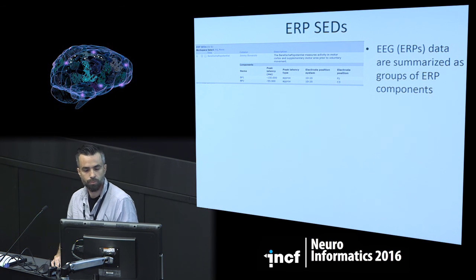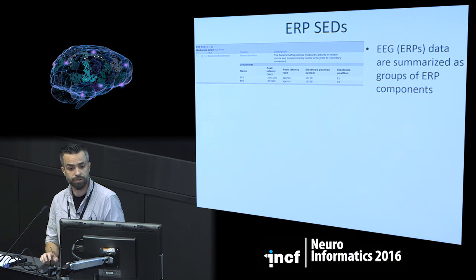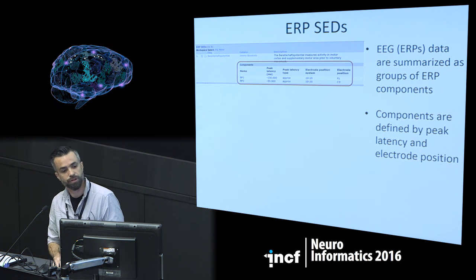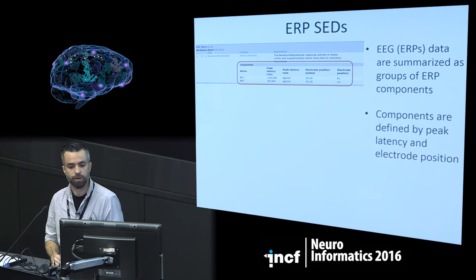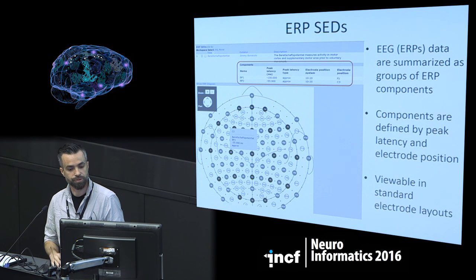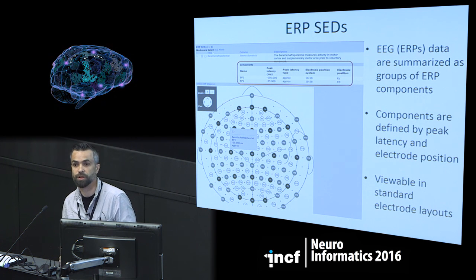For EEG data, we allow users to summarize it in terms of ERPs, which are summarized as groups of ERP components. This is an example showing an entry for the Bereitschaftspotential along with its early and late components, defined by their peak latency and electrode locations. Users can view these in standard electrode layouts — here showing where the late component of the Bereitschaftspotential is usually recorded from.